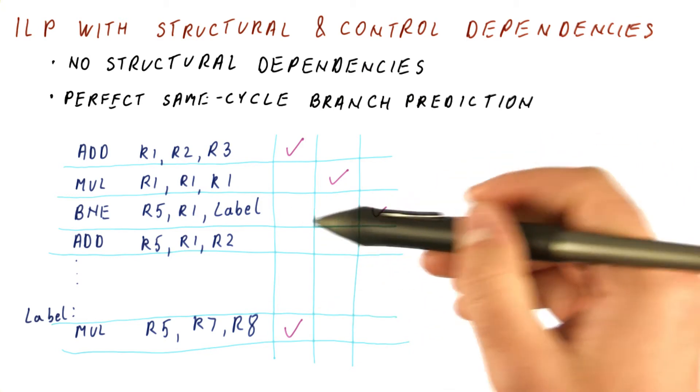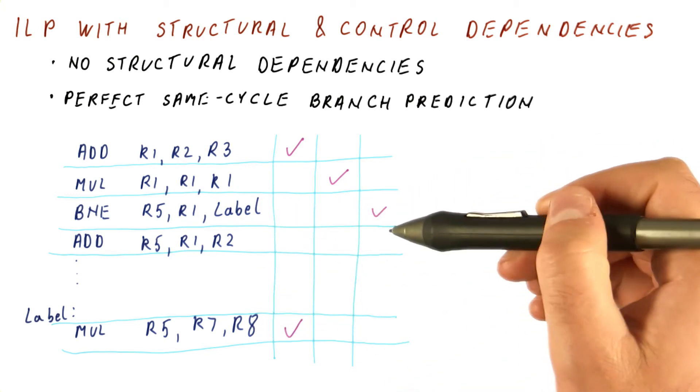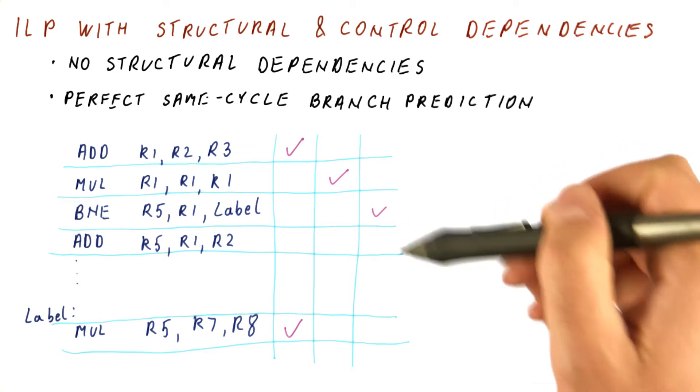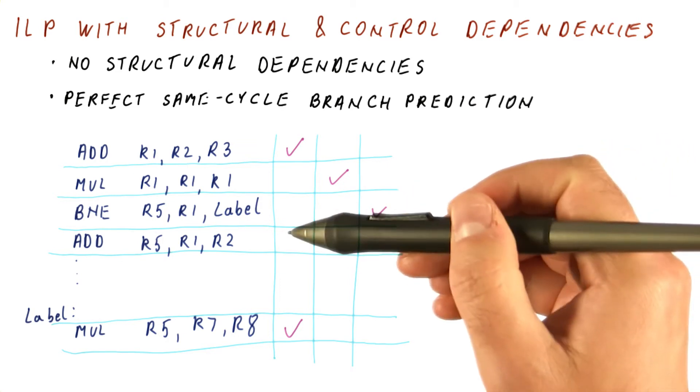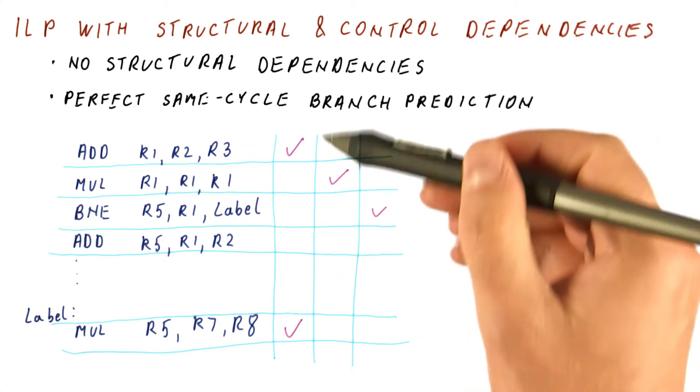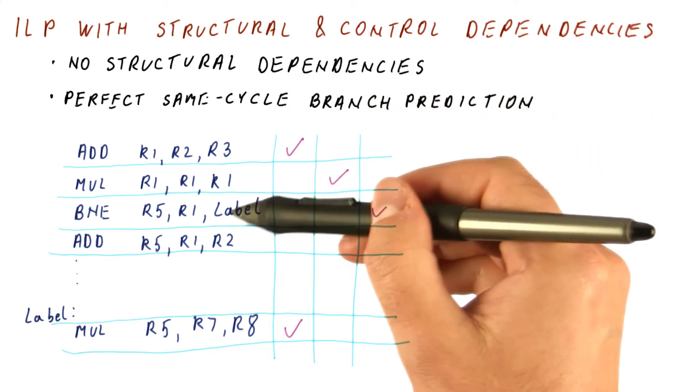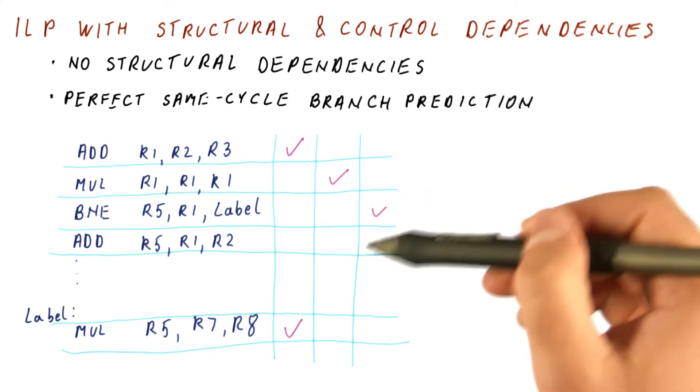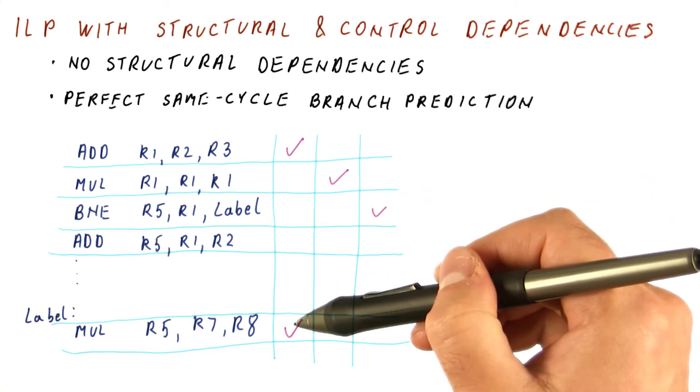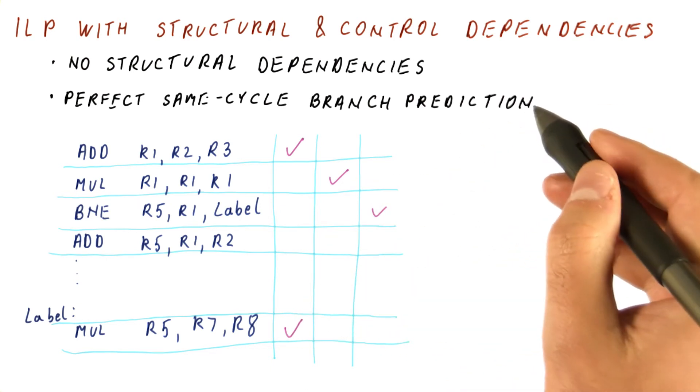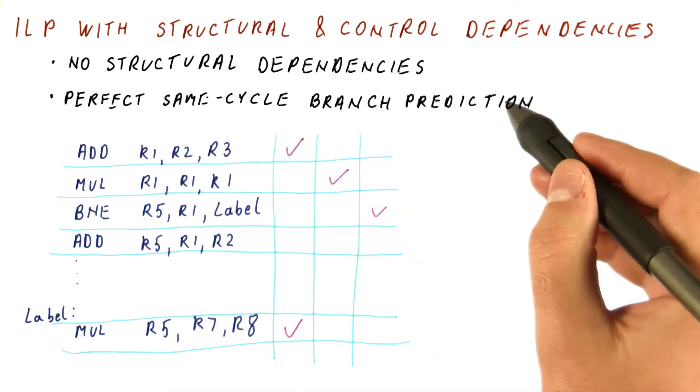So as you can see, not only are control dependencies not resulting in any delays after the branch happens. Actually, we are assuming perfect branch prediction, and that means that this branch is predicted even before it's executed, so that we can just do dependent instructions. Pretty much, we can completely ignore control dependencies.